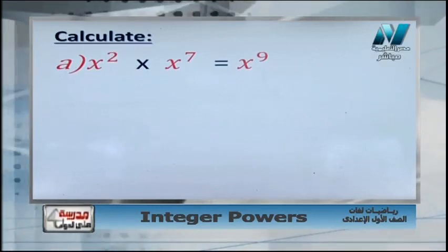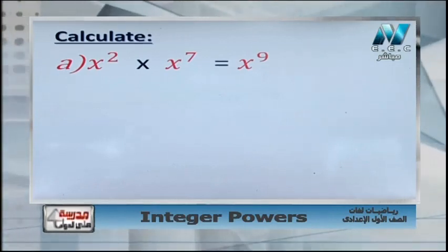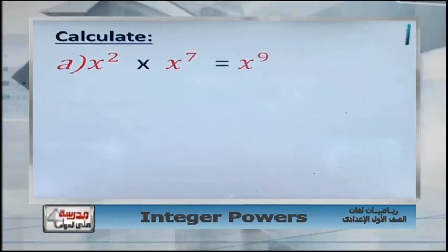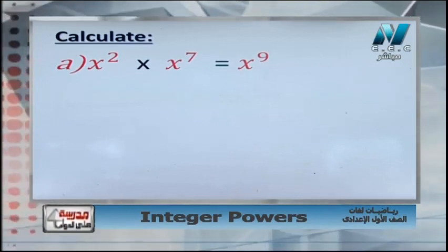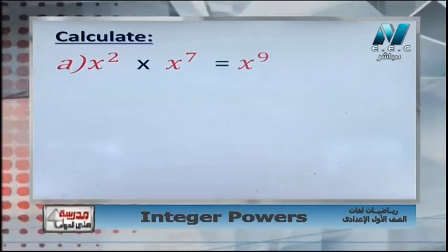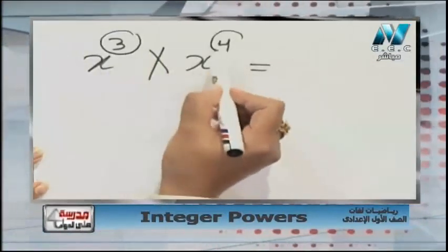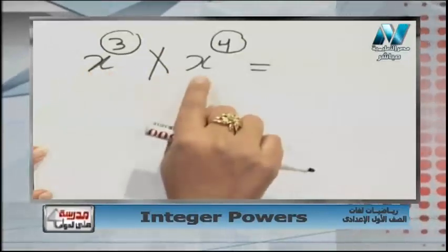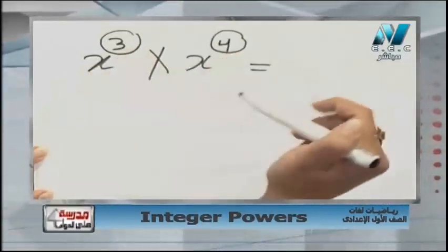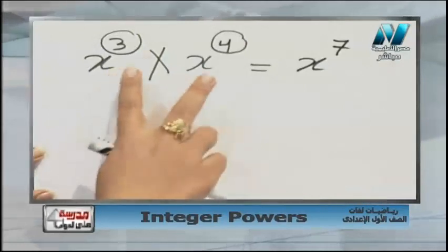Let's see our next new rule. If we have x power 3 times x power 4, the two parts have the same base x. When we multiply same bases, we add the powers. So it will be x, power 3 plus 4 equals 7. Another example: a power 2 times a power 4. Same base, so we add the powers: 2 plus 4 equals 6, giving a power 6.